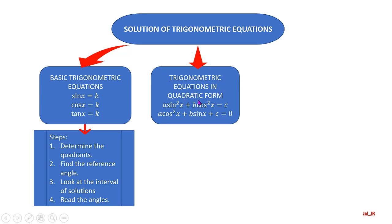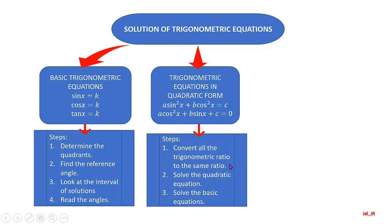The second type of equations is trigonometric equations in quadratic form: a·sin²(x) + b·cos²(x) = k, or a·cos²(x) + b·sin(x) + k = 0. To solve these, first convert all trigonometric ratios into the same ratio — usually using trigonometric identities. The next step is solving the quadratic equation, and finally solve the resulting basic equations.